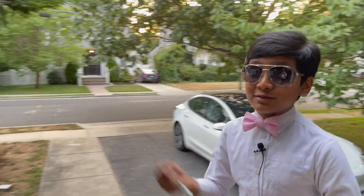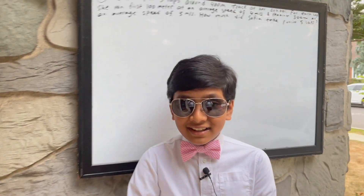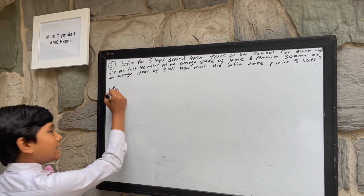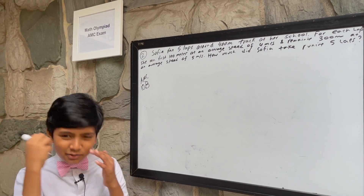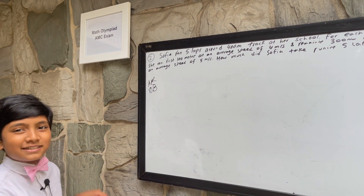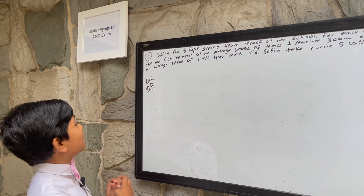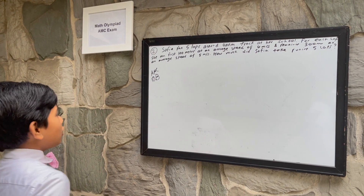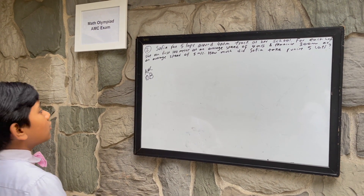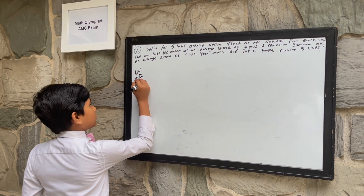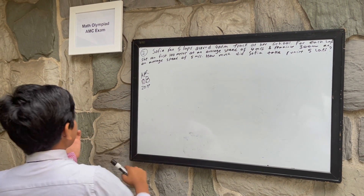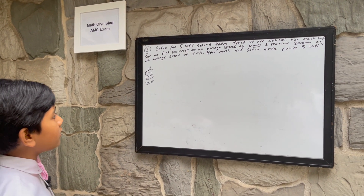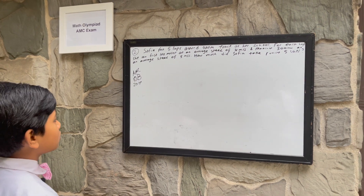Today we're going to be doing an AMC 10B problem. Sophia ran five laps around the 400 meter track at her school.